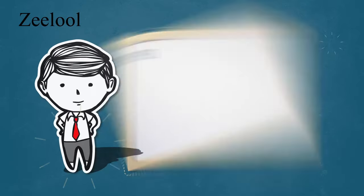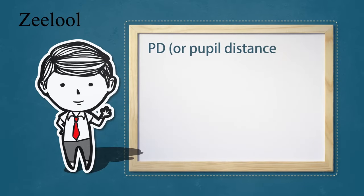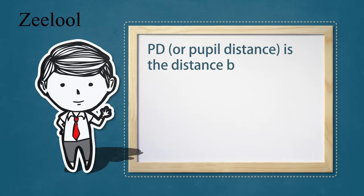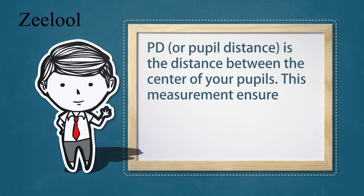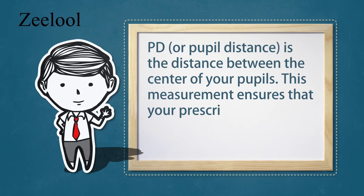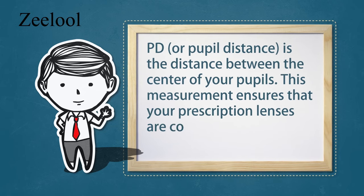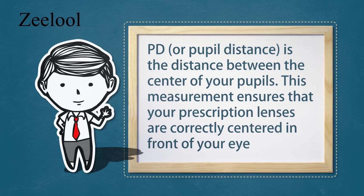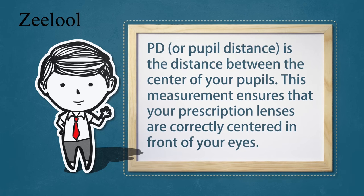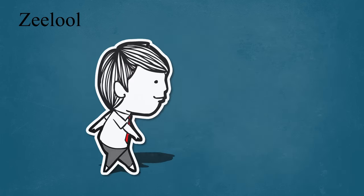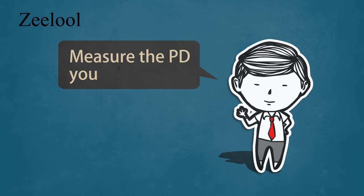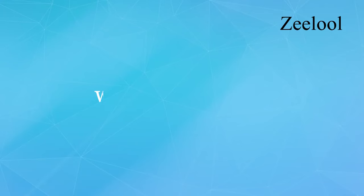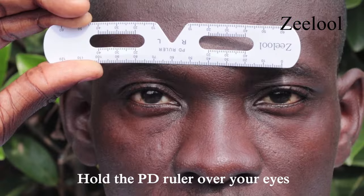What is PD? PD, or pupillary distance, is the distance between the center of your pupils. This measurement ensures that your prescription lenses are correctly centered in front of your eyes. To measure the PD yourself, when you have one PD, hold the PD ruler over your eyes.